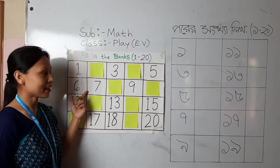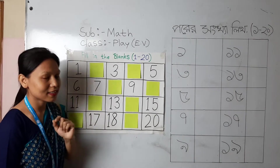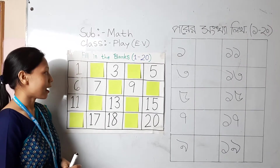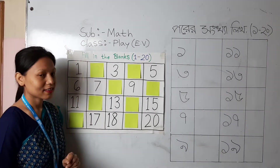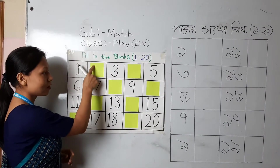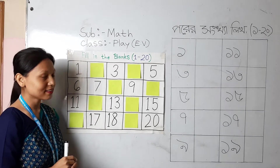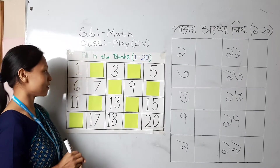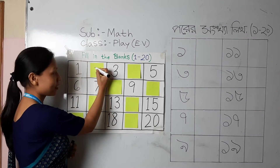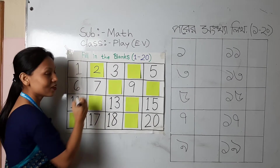You see — fill in the blanks, one to twenty. You already know one to twenty, so let's rewrite and read. This is one. Number two is missing, so we will write number two. See how I am writing — like a C and then right. This is two.